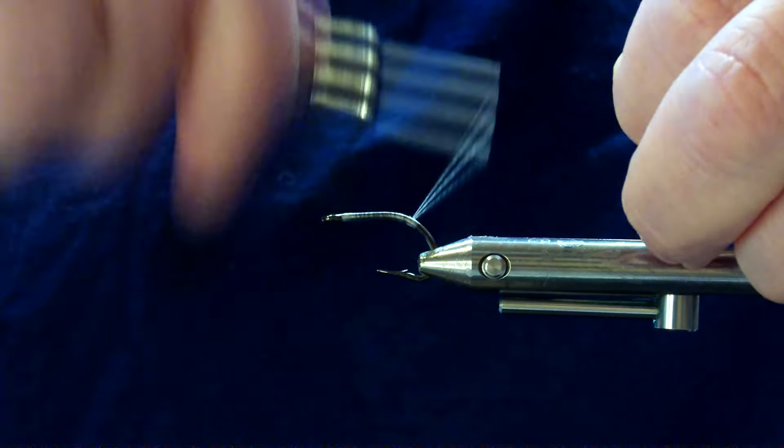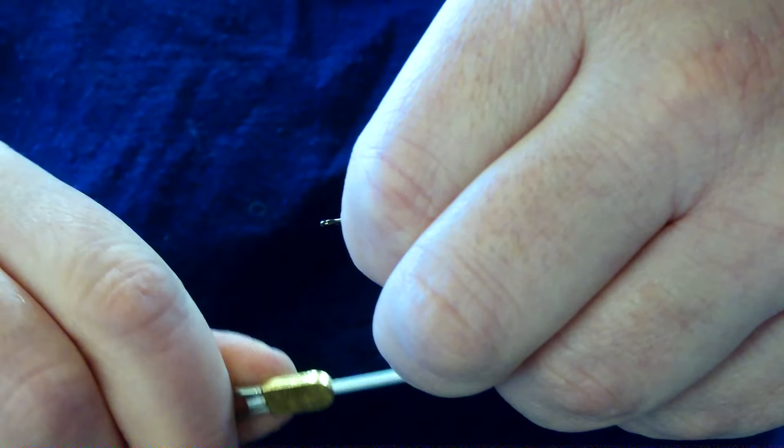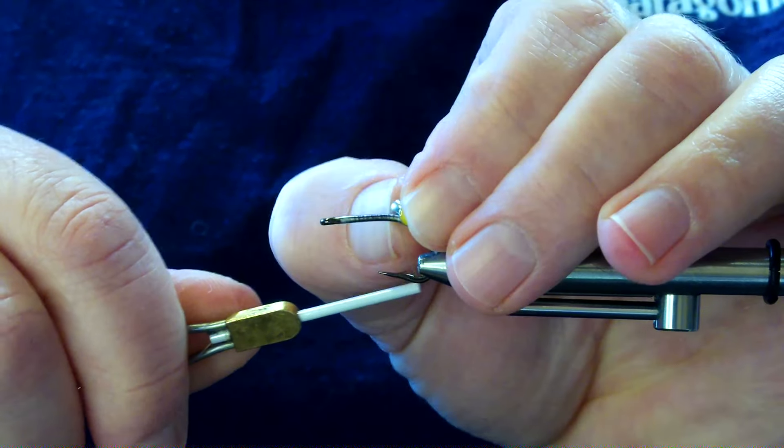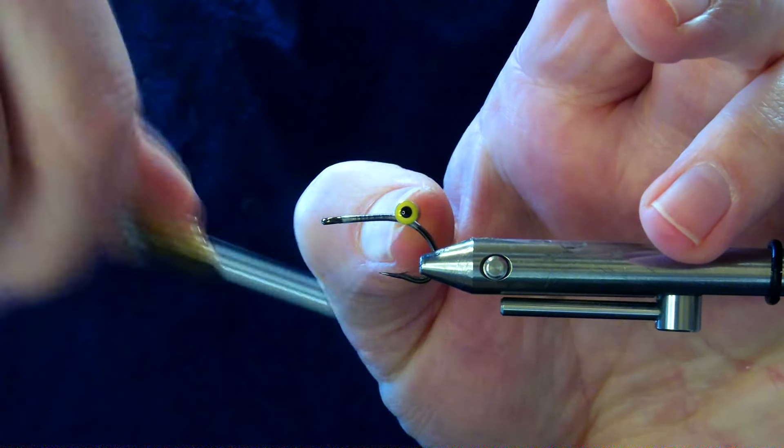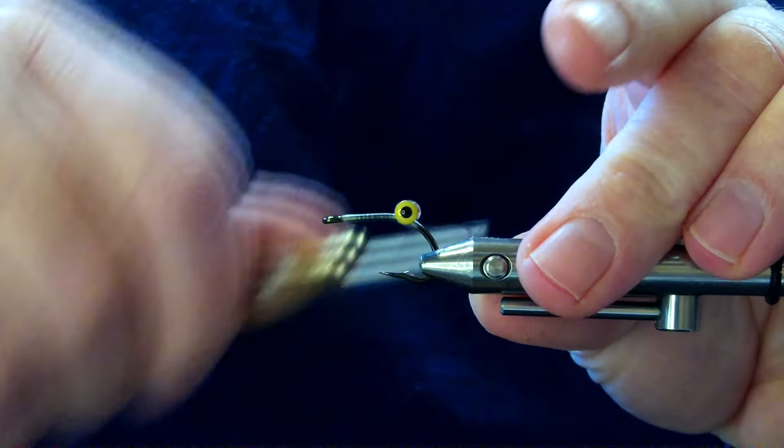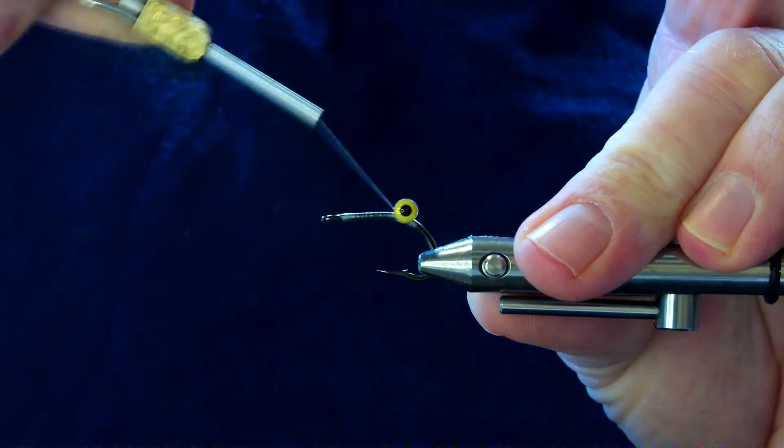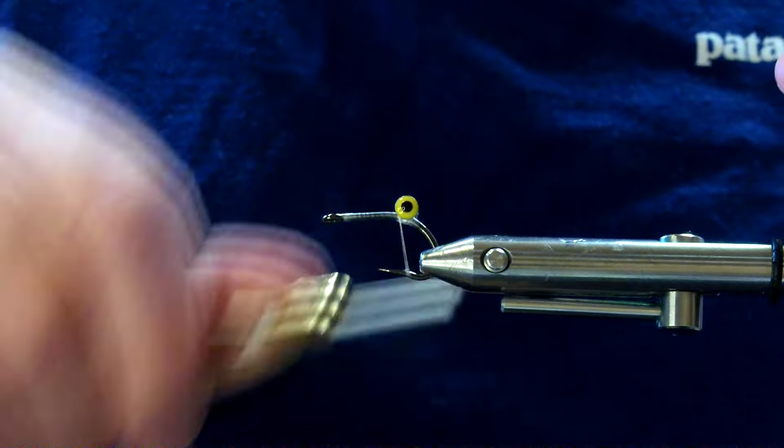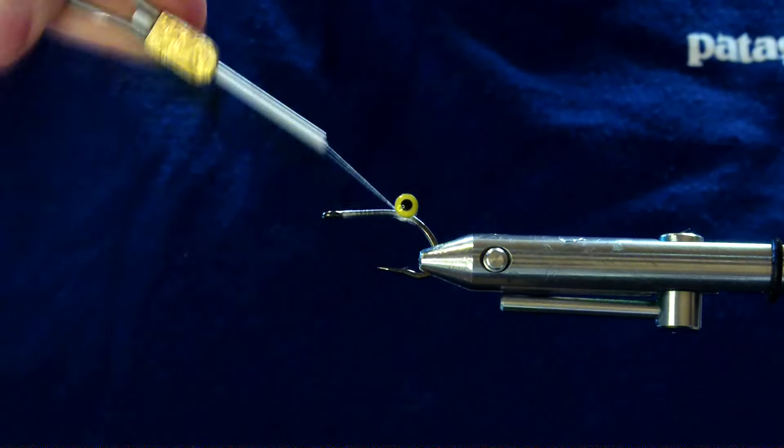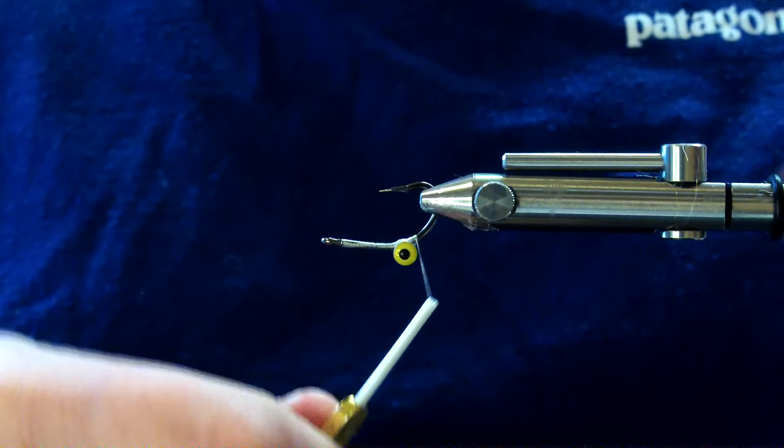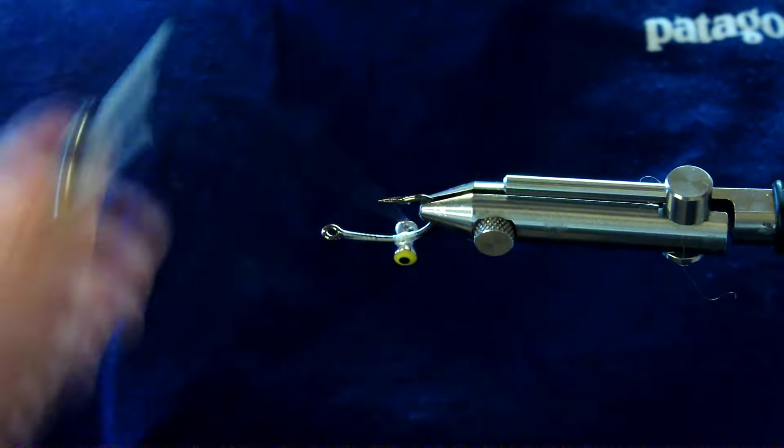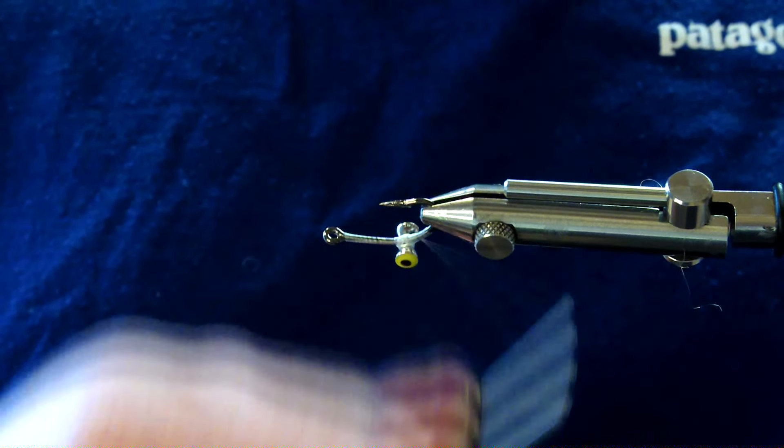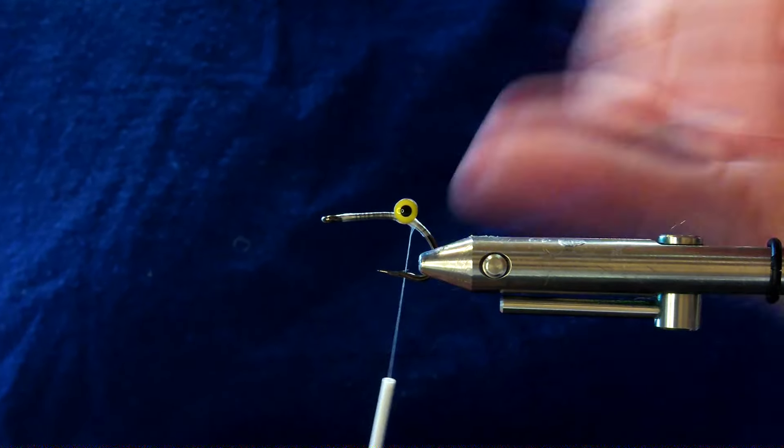Thread is 210 Danville's flat waxed in white and the eye is a 4 mil yellow and black pupil dumbbell. Obviously you can use nickel plate or tungsten if you want as well. These don't need to be super heavy because they're gonna be fished in shallowish water.